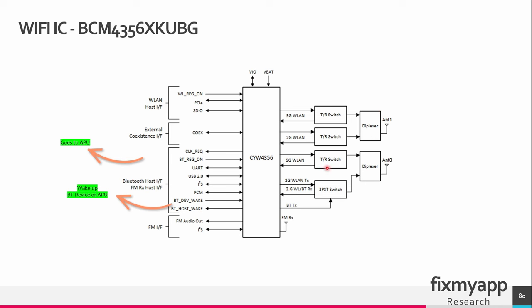These are the TR switches. The TR switch, also known as a radio frequency switch or antenna switch, is used to direct the flow of radio frequency signals between the transmitter and the receiver. During transmission it connects the transmitter to the antenna, allowing RF signals to be transmitted out to the air. During reception it connects the antenna to the receiver, directing the received RF signals to the receiver for processing. These two parts are the diplexers — the diplexer is used to combine or separate signals at different frequencies, allowing transmission and reception over one antenna. In many WiFi systems, the diplexer separates incoming and outgoing signals based on their frequencies.